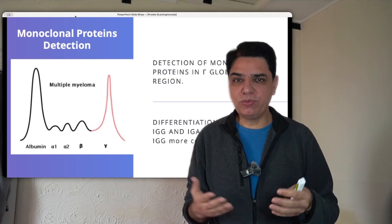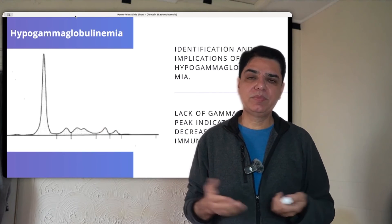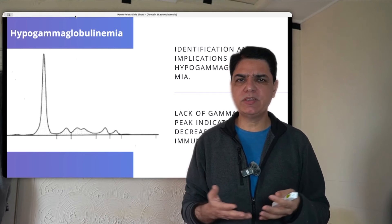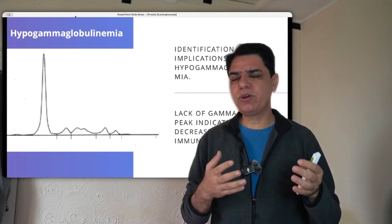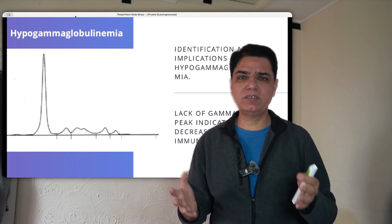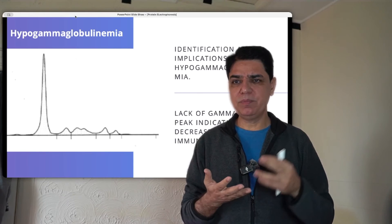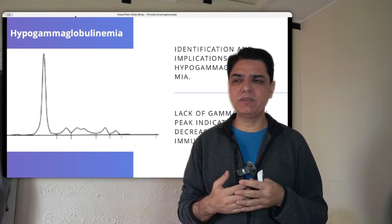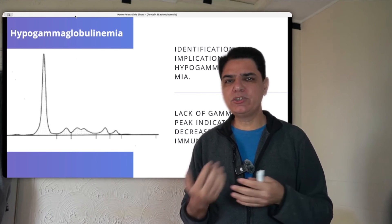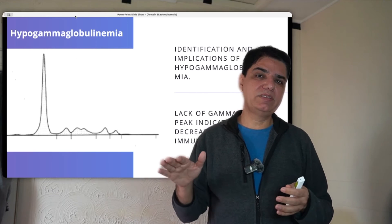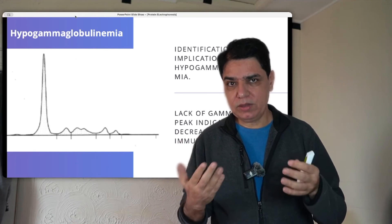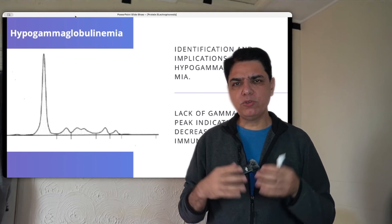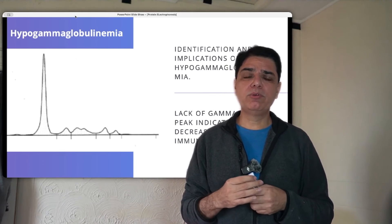If you get a flattened gamma globulin section on the protein electrophoresis, you are dealing with hypogammaglobulinemia, meaning low gamma globulins. Further testing through flow cytometry or subclassing is needed to determine whether it is IgG, IgA, IgE, or panhypogammaglobulinemia. Children with hypogammaglobulinemia typically present with frequent, recurrent bacterial or viral infections, or a combination of both.